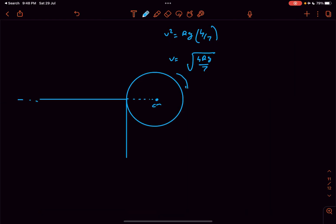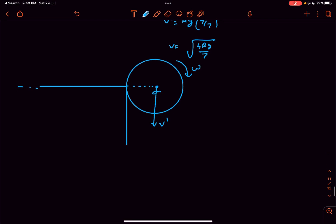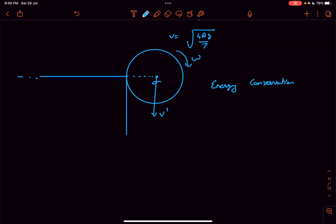This will still have the same omega but the velocity of the center of mass would be now different because it has fallen through some distance so its velocity is different now. Let's say it is v dash. Now we can again conserve energy.